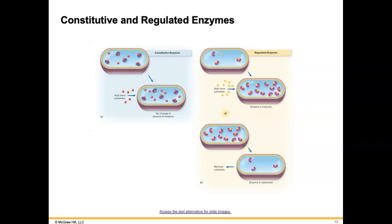Regulated enzymes are regulated by whether or not there is substrate available. You can see in this top picture that there are a few substrates — the yellow is supposed to be the substrate — and there are fairly equal amounts of enzymes shown. But if I add a whole bunch more of that substrate, say if a bacteria has a whole bunch of some specific substrate available, then that bacteria will be able to make more of that enzyme. The enzyme is then induced to be made — it's called induction of enzymes. Less substrate, less enzyme; more substrate, more enzyme.